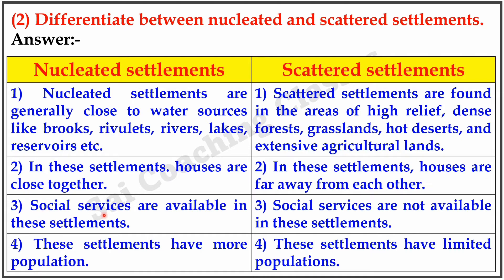Social services are available in nucleated settlements, whereas social services are not available in scattered settlements. Nucleated settlements have more population, while scattered settlements have limited populations.